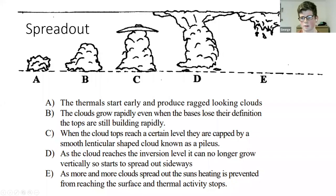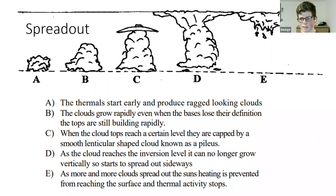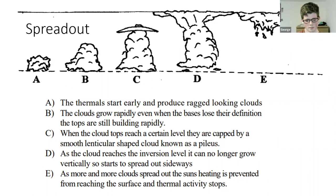Spreadout is another issue — we usually get it most in March to May time. You'll see cumulus starting to pop at 8:30–9 a.m. and then very quickly it all rises up to the inversion layer and spreads out into one big layer. All it does is stop the sun heating the ground, which completely cuts off convection — in half an hour there are no thermals and you have to wait for a recycle.